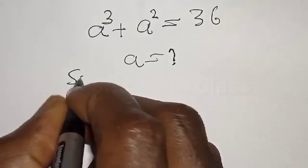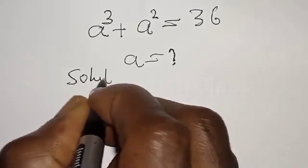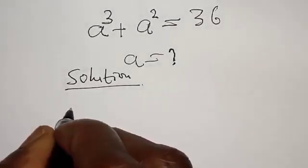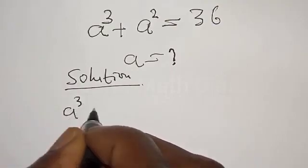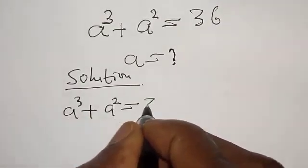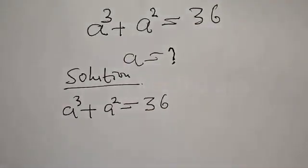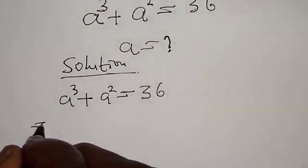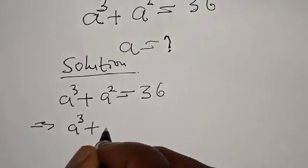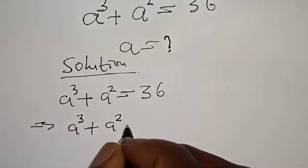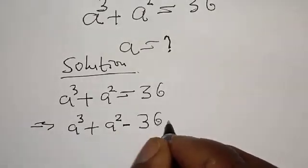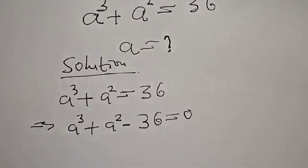Solution. We have A raised to power 3 plus A squared is equal to 36. This implies that we have A raised to power 3 plus A squared minus 36 equal to 0.